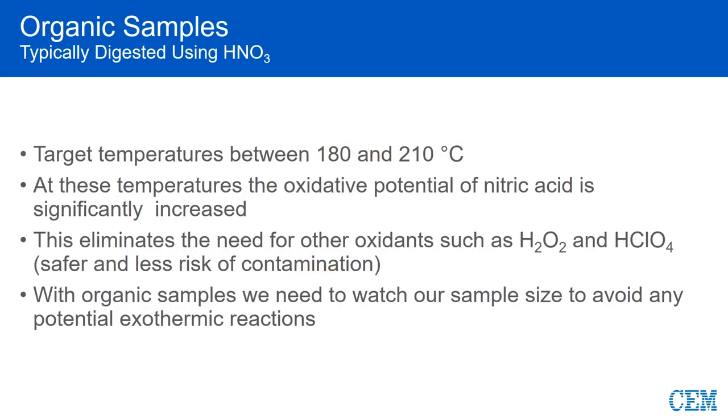Organic-based samples, those which contain carbon, hydrogen, oxygen, and nitrogen, are typically digested in nitric acid alone at temperatures between 175 and 200 degrees C. Since nitric acid is heated well above the boiling point, you can eliminate other oxidizing acids, such as perchloric and hydrogen peroxide.